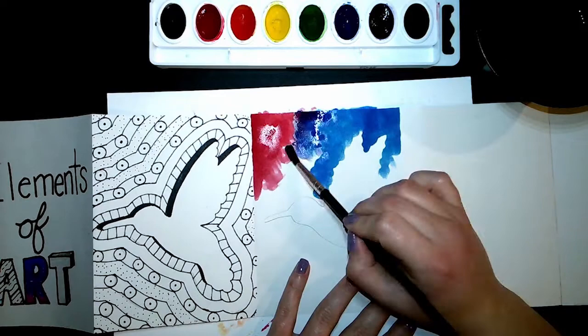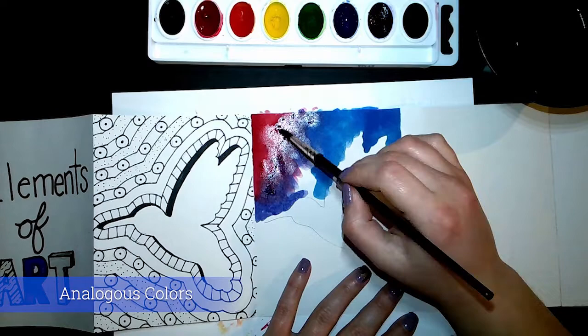In this example, I'm using analogous colors. I'm using red, purple, and blue. They all touch each other on the color wheel.